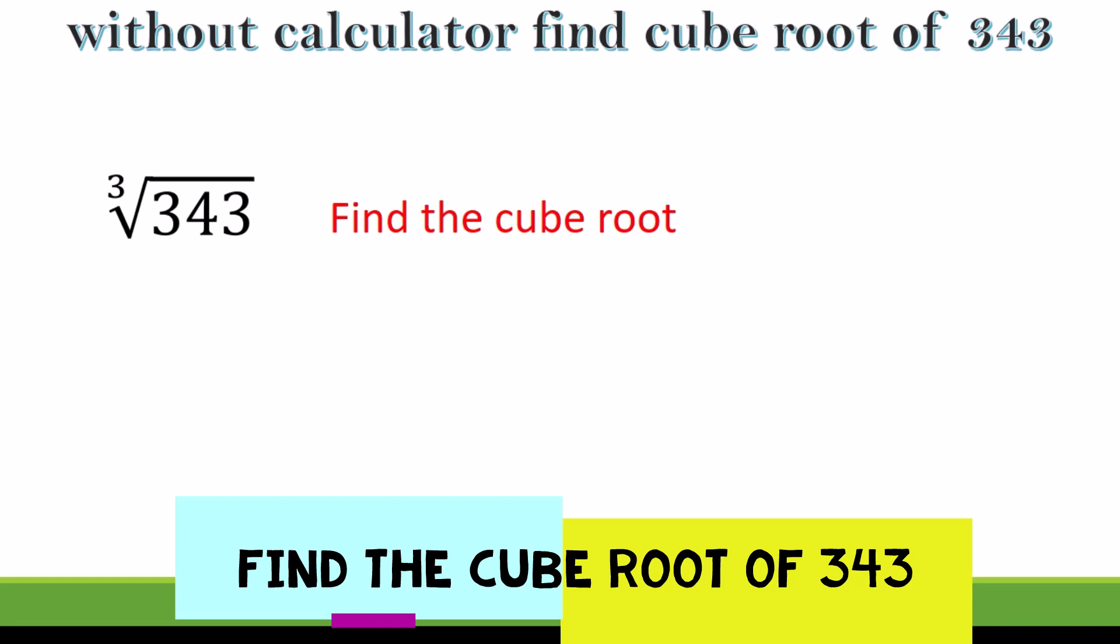What you're looking for here: 343 is a number times itself three times. Whatever number when you multiply that number three times you get 343.